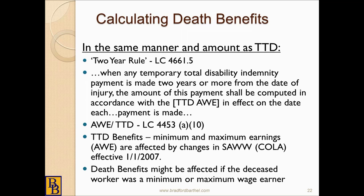Average weekly earnings and TTD are discussed in Labor Code section 4453, and it tells us that TTD benefit minimums and maximums are affected by changes in the state average weekly wage — COLA — effective January 1, 2007. Although COLA does not apply directly to death benefits — COLA applies directly only to permanent total disability and life pension — COLA will indirectly affect temporary total disability benefits. If the deceased worker was either a minimum or maximum wage earner, COLA might affect the average weekly rate for those death benefits.